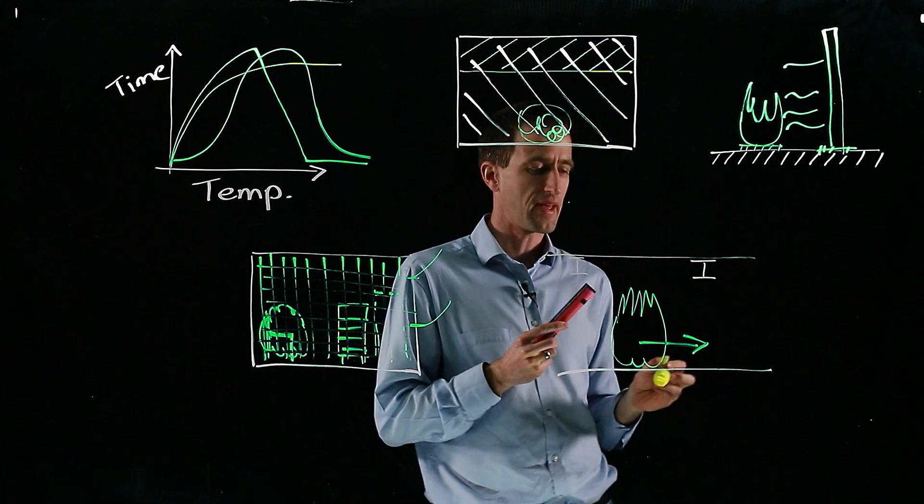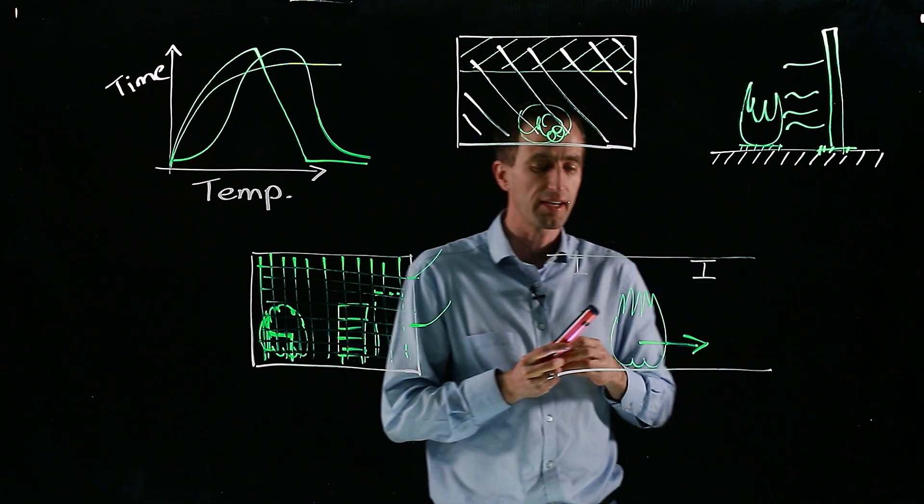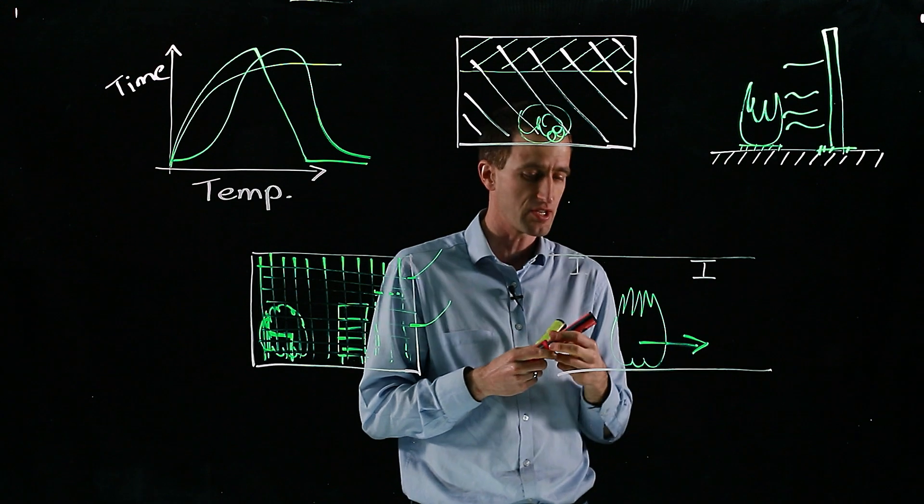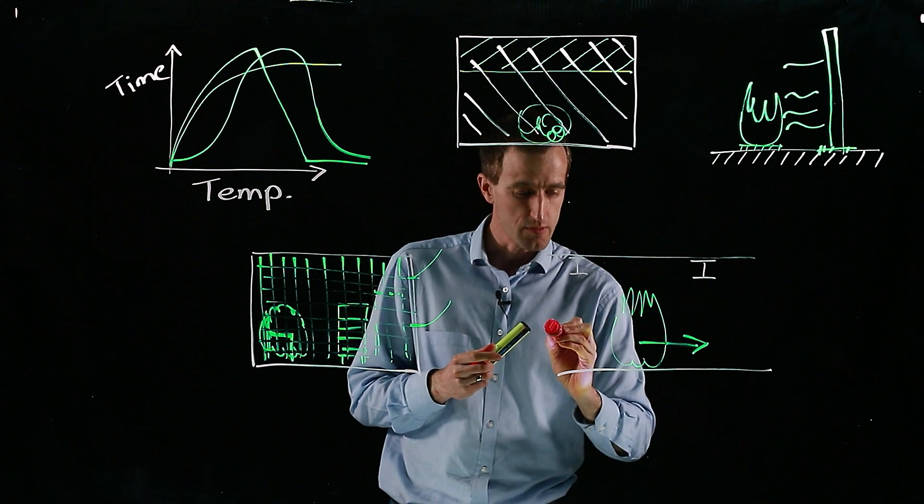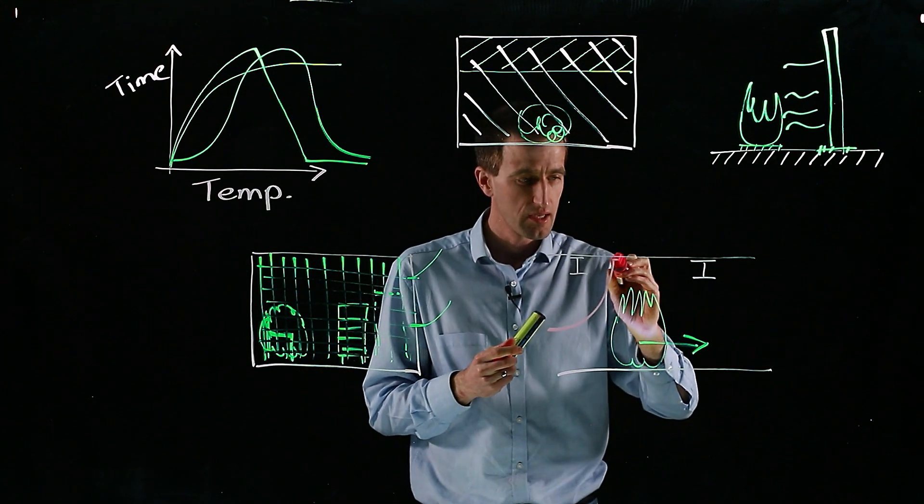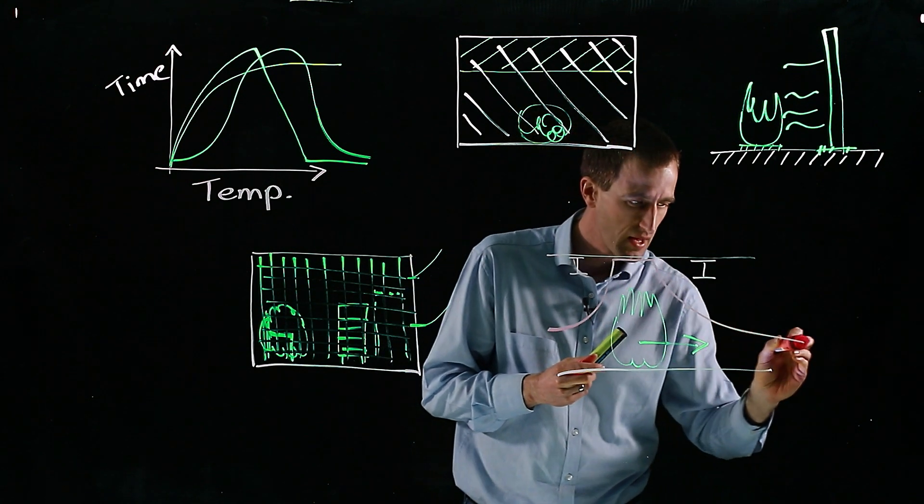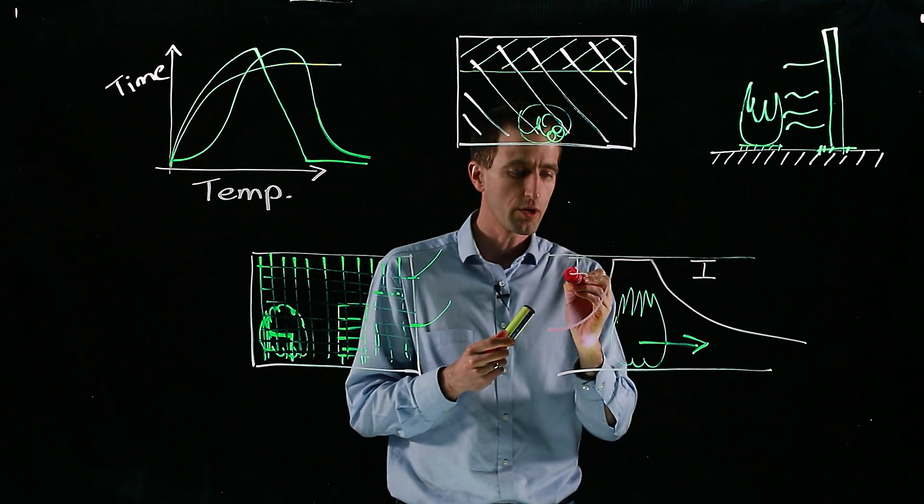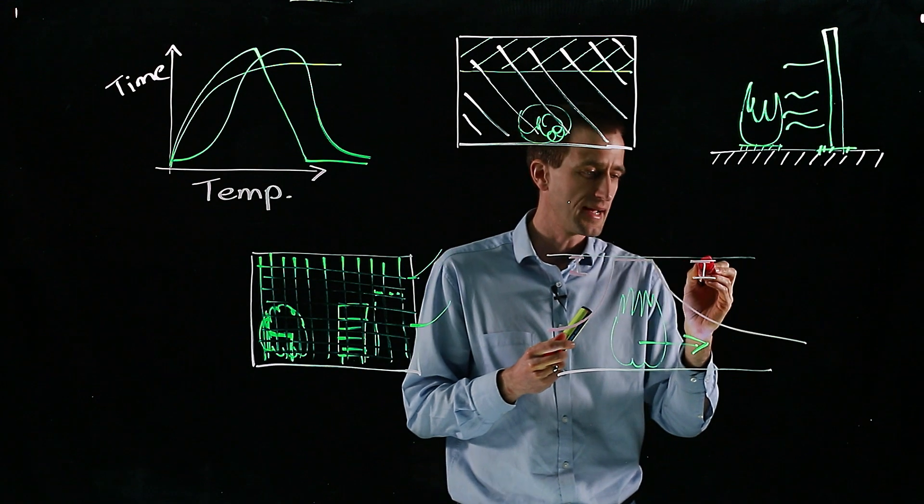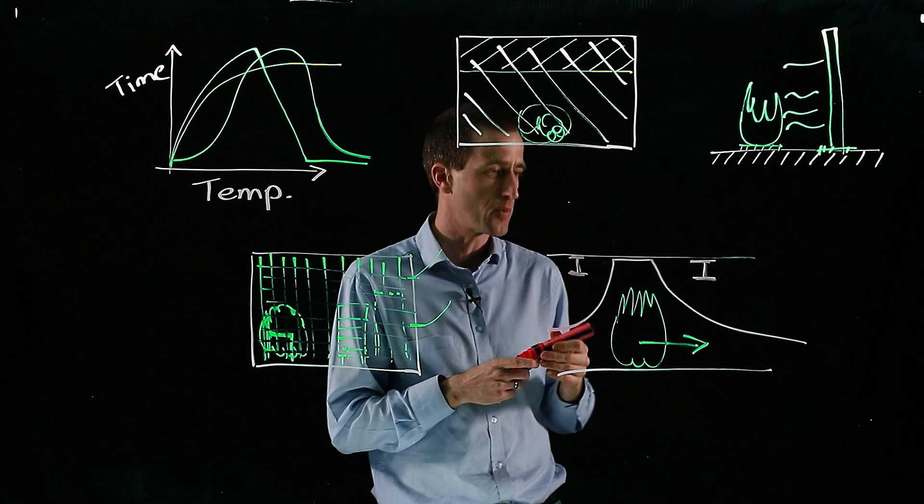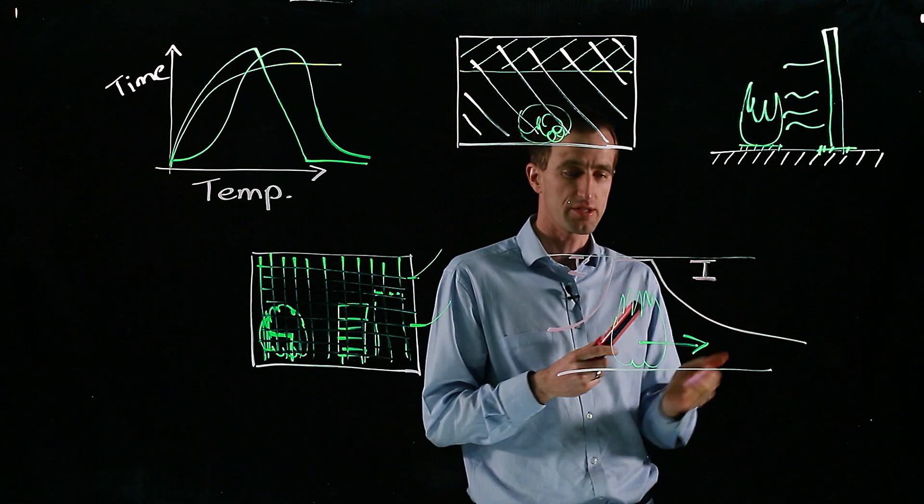There are traveling fire models that can be used to predict the temperature as it passes through. So this pink line then predicting the temperature, and then as it moves we can see what would our real items in this building be exposed to. And from those we could design the floor, the beams, or the columns, or whatever different items are required.